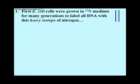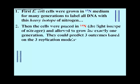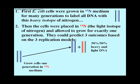Meselson and Stahl had access to nitrates made with heavy nitrogen, or N15. They grew cultures of E. coli in media containing the heavy nitrogen, and after several generations, all of the DNA in the cells was heavy DNA, shown as blue strands here. Then cells were transferred to medium containing normal or light nitrogen, N14, and allowed to grow for one generation. For each replication model, they could predict what kind of DNA would be replicated. They would see either 100% middleweight DNA, or two distinct kinds of DNA in equal proportions.